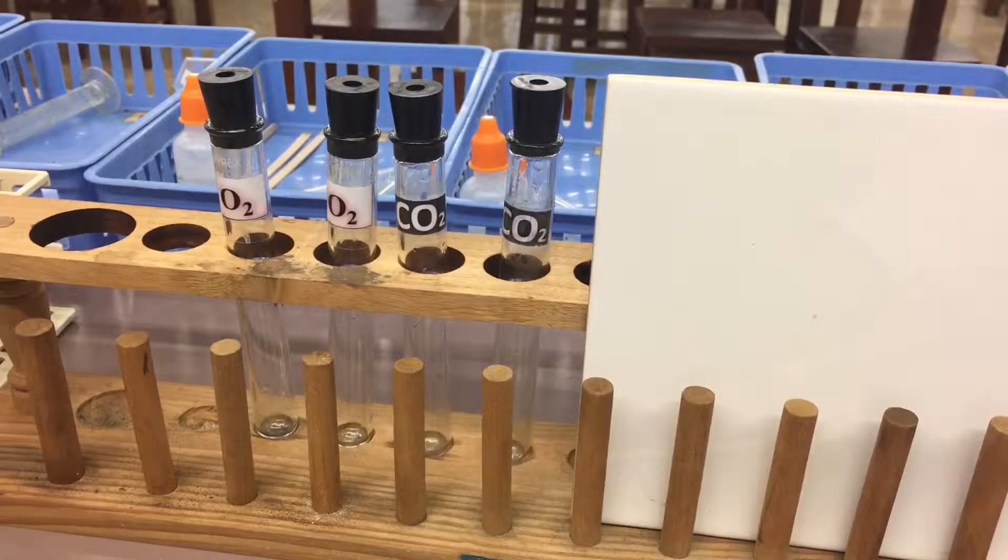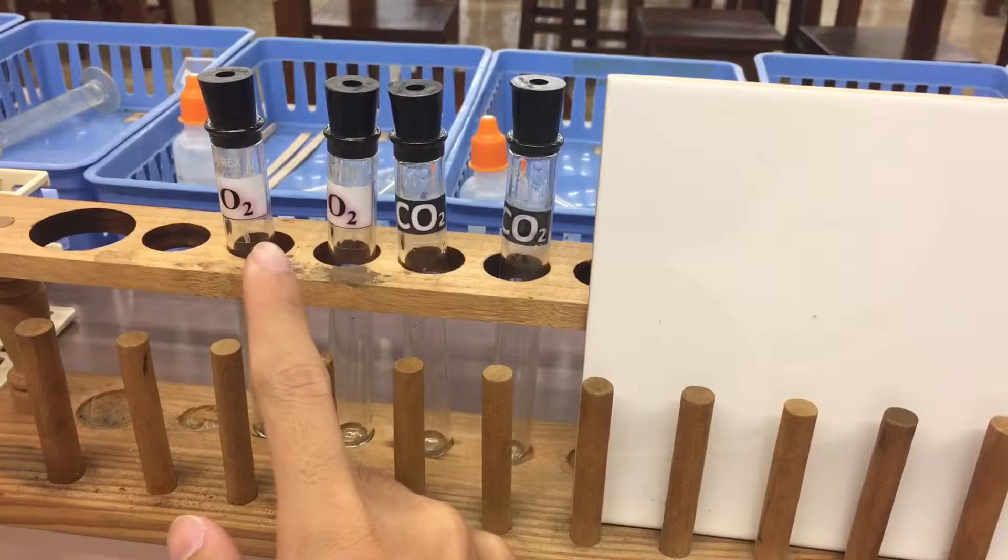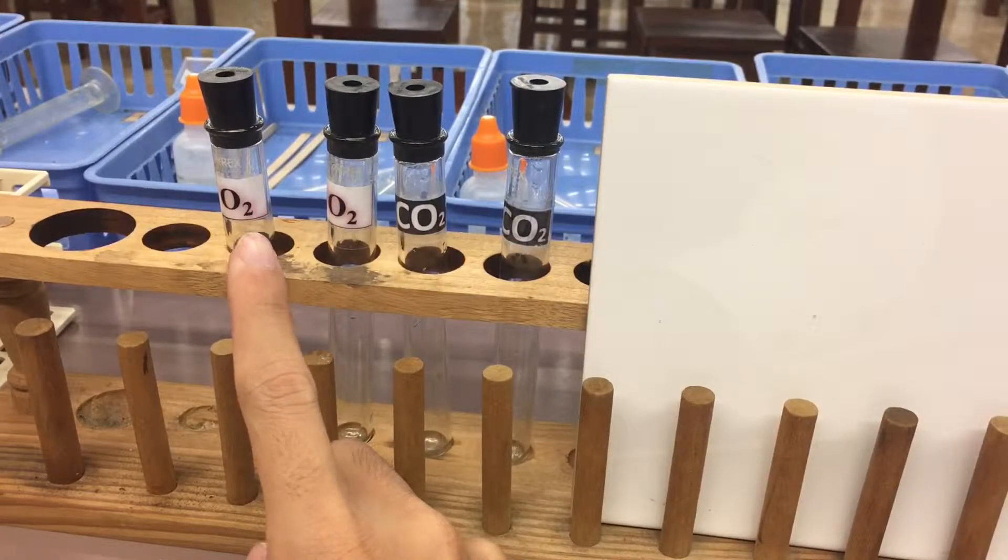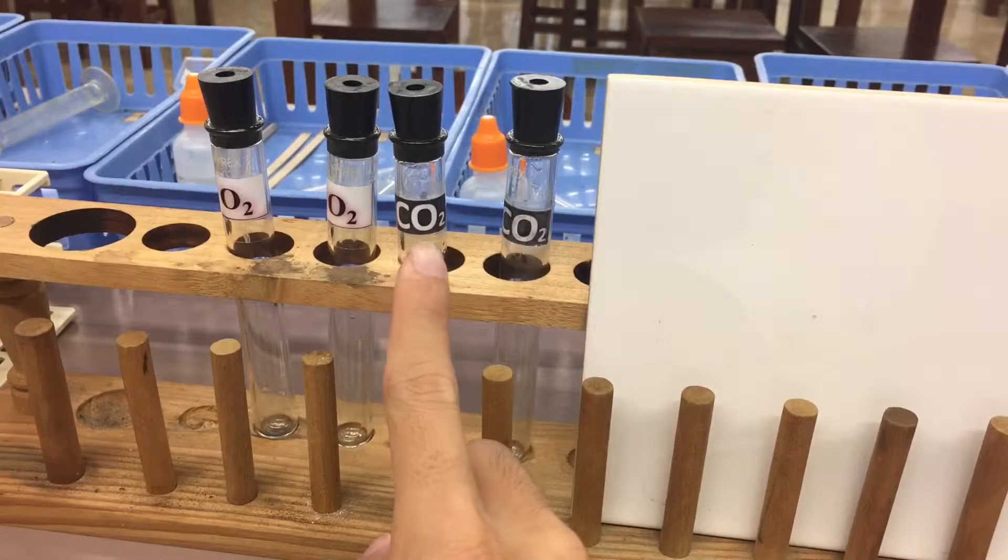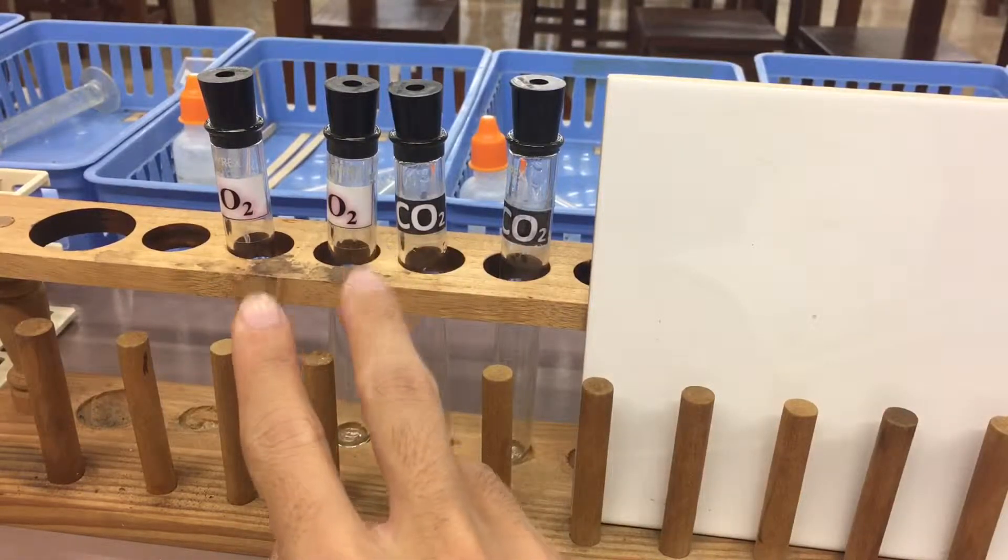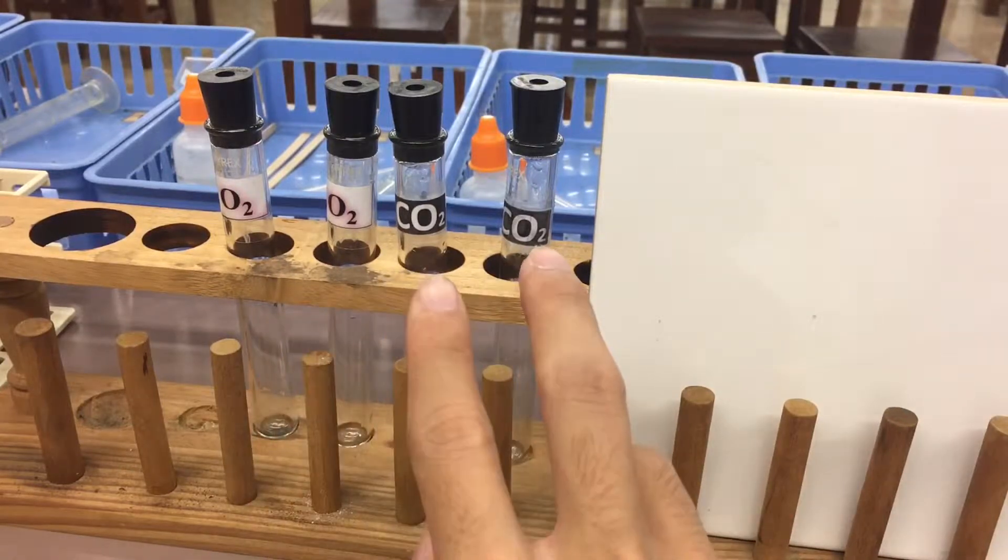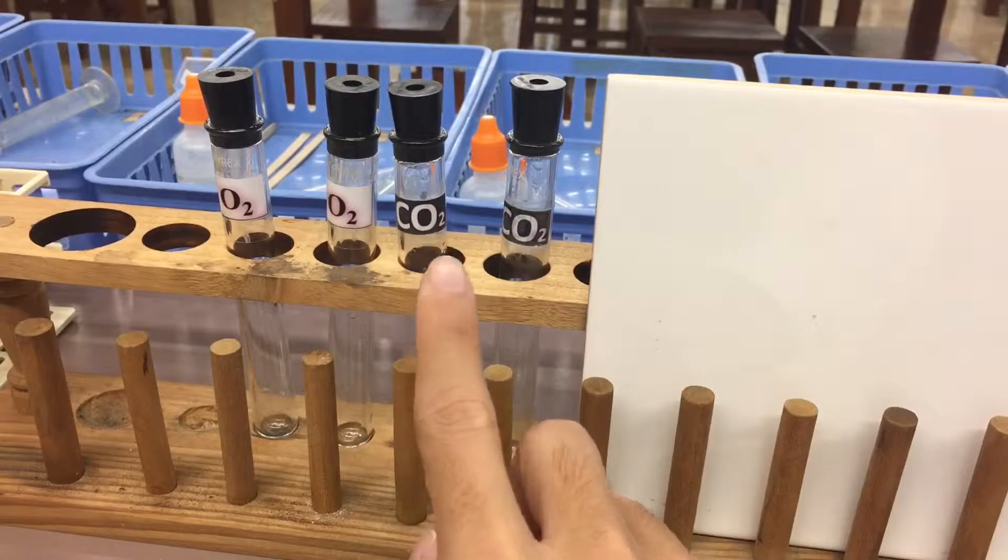In this video, I want to show you the test to identify O2 as oxygen and CO2 as carbon dioxide. We have two test tubes filled with oxygen and two test tubes filled with carbon dioxide.